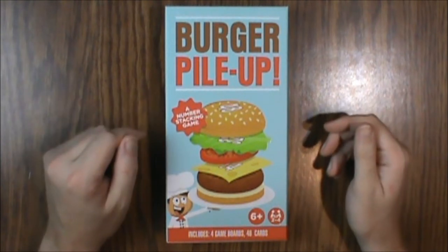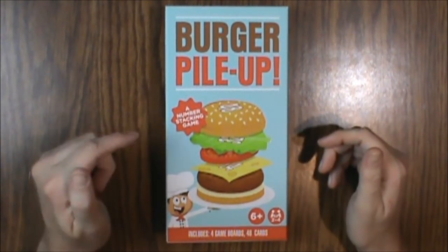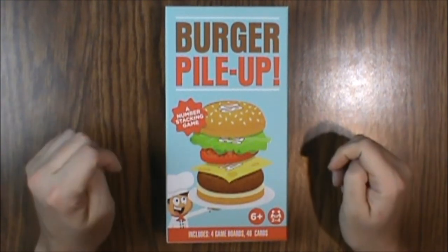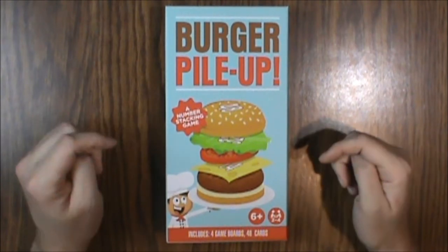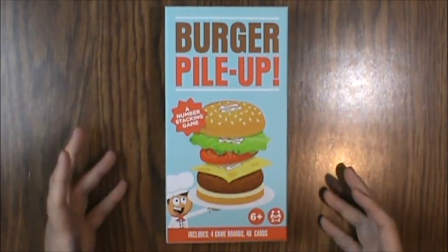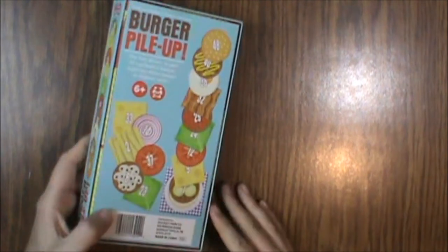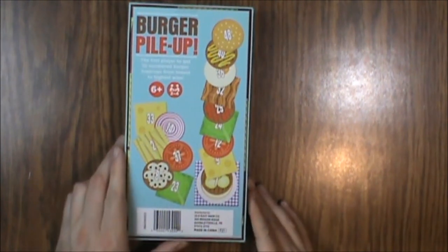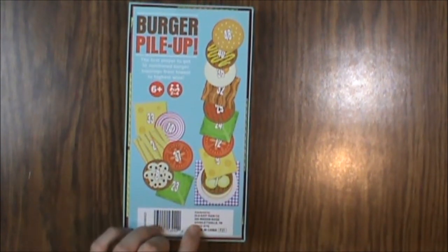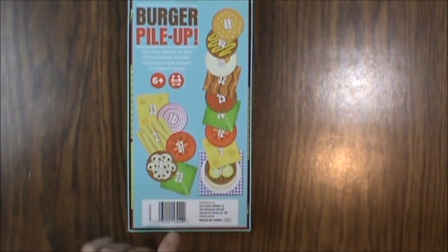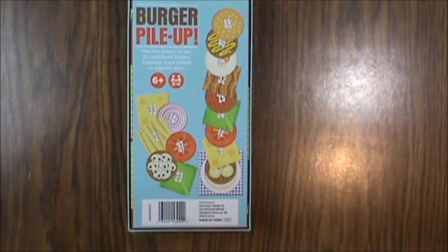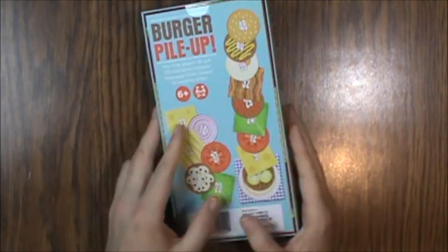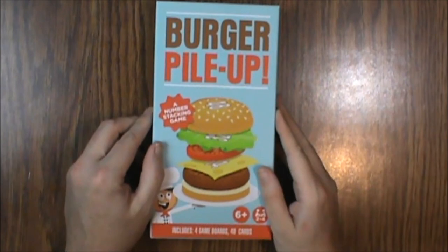Hello and welcome to another What's Inside. This time we're looking at Burger Pile-Up, a number stacking game for ages six and up, two to four players. It's distributed by Old East Main Company out of Goodlettsville, Tennessee. I bought this at a Dollar General and I think that's who produced it, but Old East Main Company is the only name on here I could find.